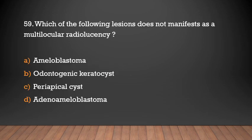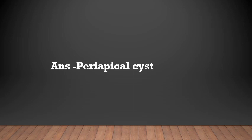Which of the following lesions does not manifest as a multi-locular radiolucency? Ameloblastoma, odontogenic keratocyst, periapical cyst, adenoameloblastoma. Answer: Periapical cyst.